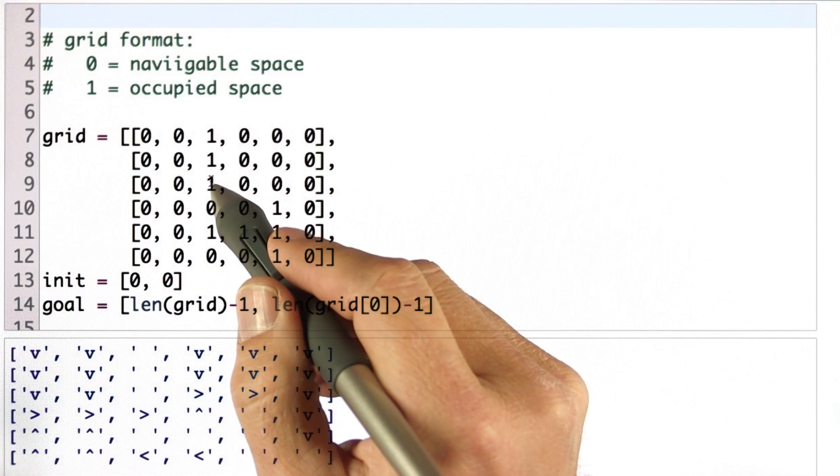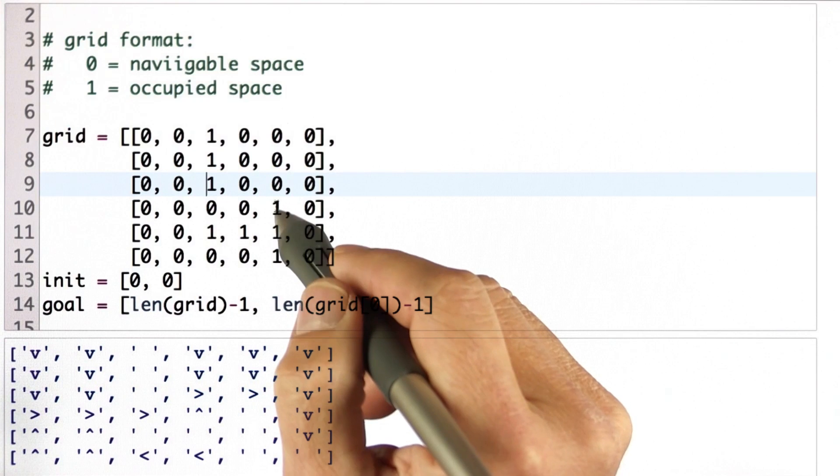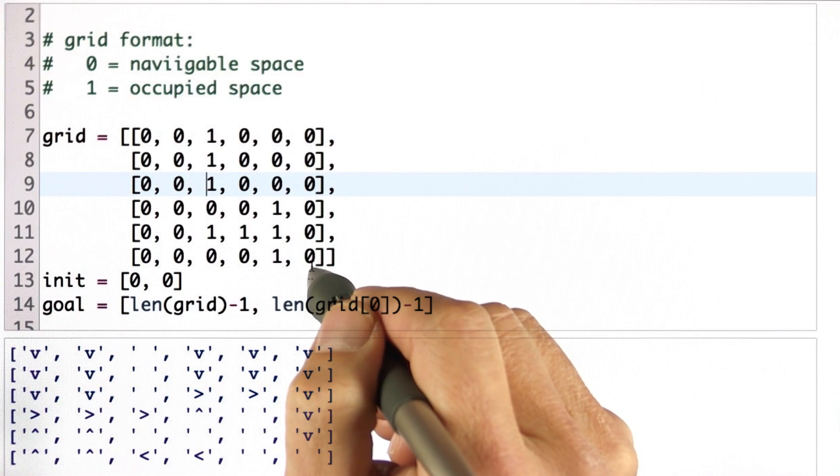If you look at the grid, there's an obstacle over here. There's a T-shaped obstacle over here. The goal is in the bottom right corner.